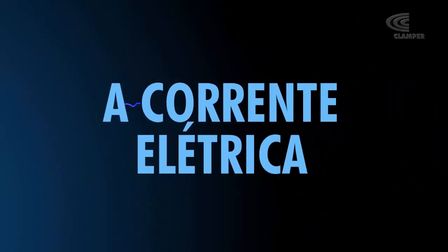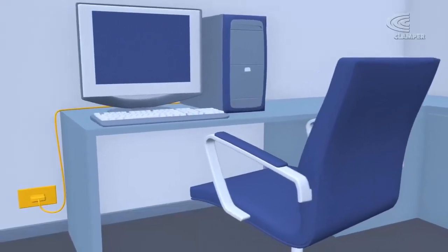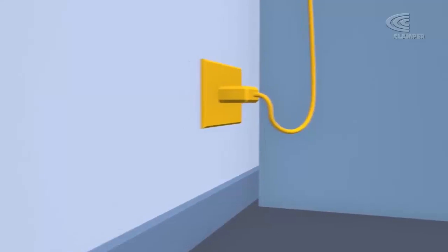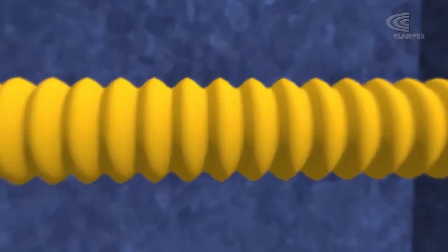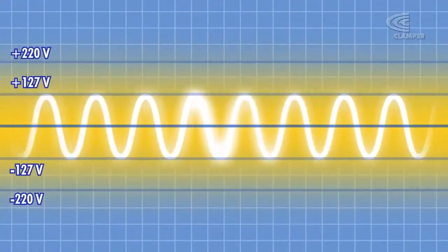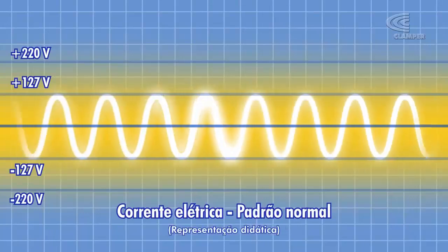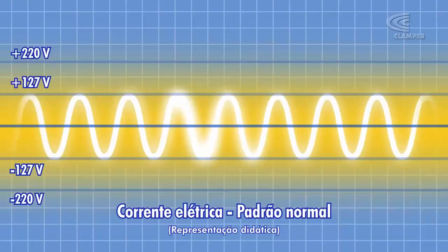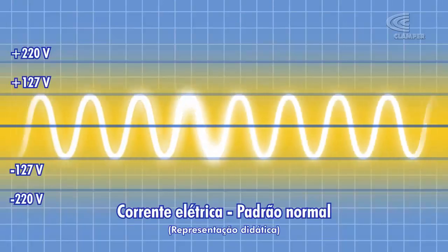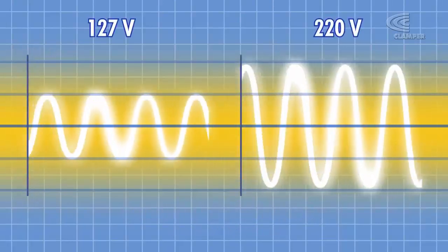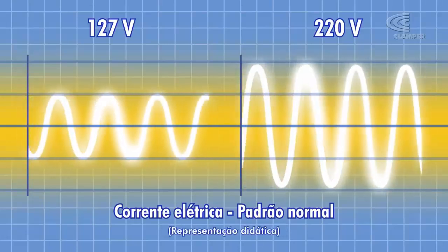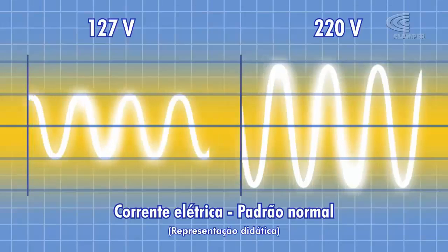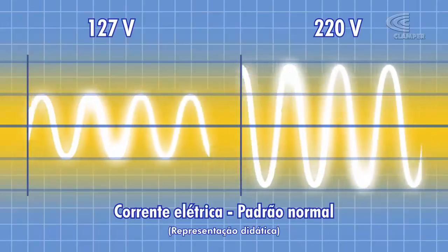A corrente elétrica é um fluxo de energia que permite o funcionamento de equipamentos eletroeletrônicos. Se déssemos um grande zoom em um fio condutor de eletricidade, nossa visão seria esta. Em seu funcionamento padrão, a corrente elétrica é representada graficamente desta forma. A tensão elétrica usual é de 127 ou 220 volts. Aqui está a representação gráfica dessas duas voltagens.